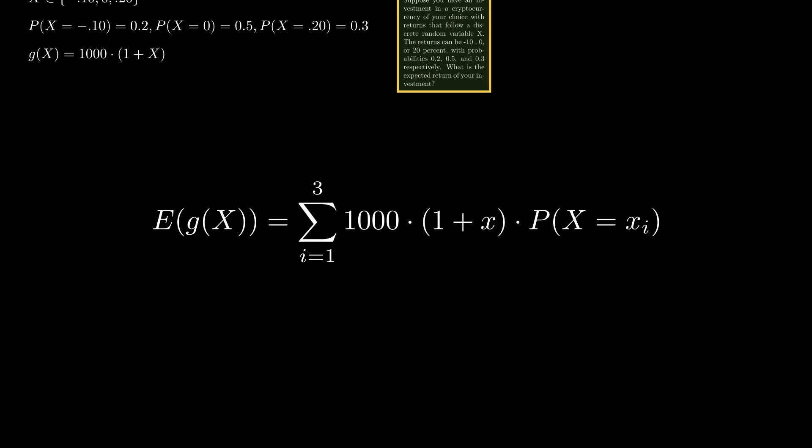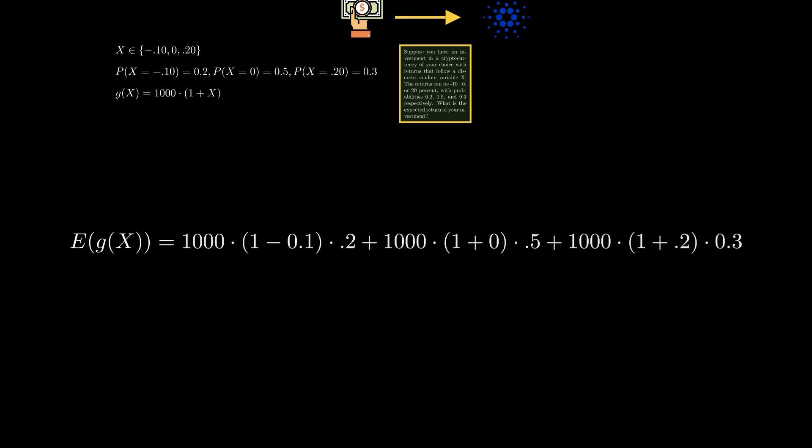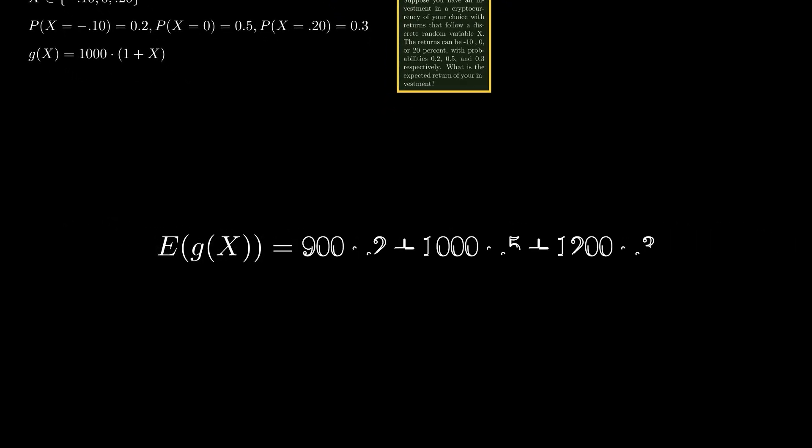Now, we can substitute the values of X and probabilities of X into the formula like this. After solving the equation, we get the expected return of your investment as $1040.